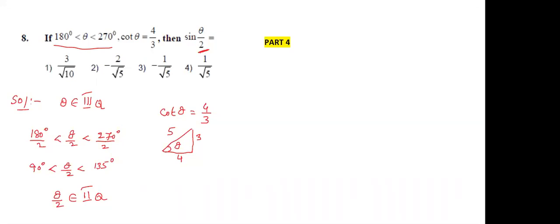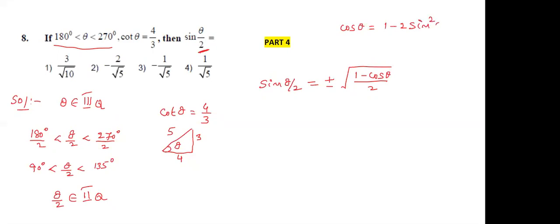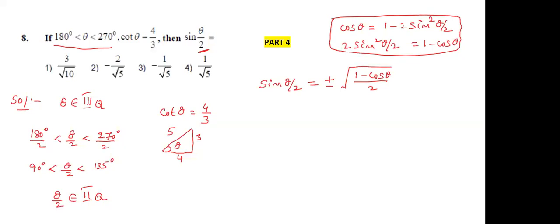They are asking for sin(θ/2). The formula for sin(θ/2) is plus or minus under root of (1 minus cos θ) by 2. How do we get this? From the cos θ formula: cos θ = 1 minus 2 sin²(θ/2), rearranging gives 2 sin²(θ/2) = 1 minus cos θ, so sin(θ/2) = ±√((1 − cos θ)/2).